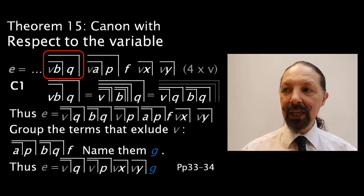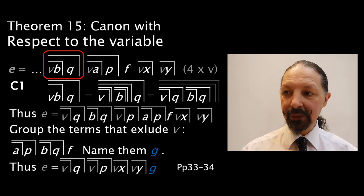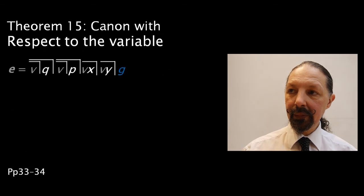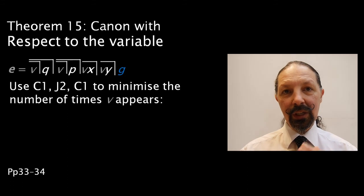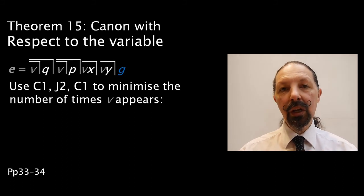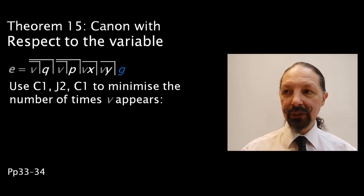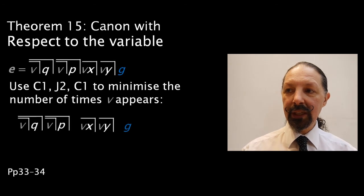So the expression E then becomes this. Taking this we're going to use C1, J2, C1 to reduce the appearances of V's. Here's how it works.